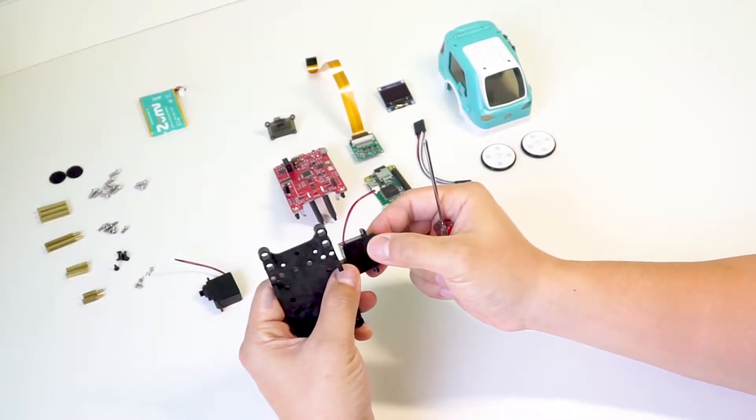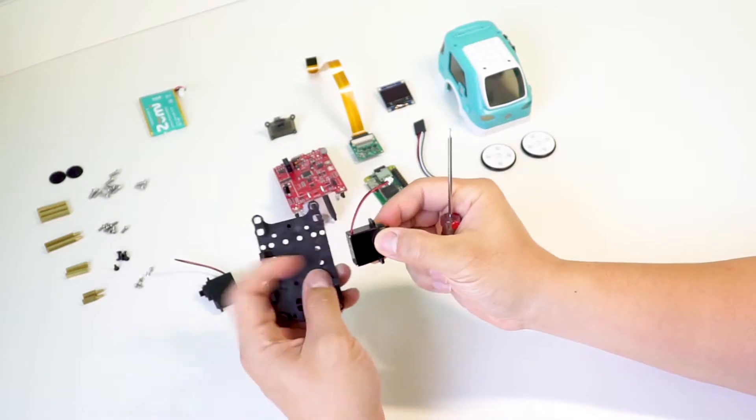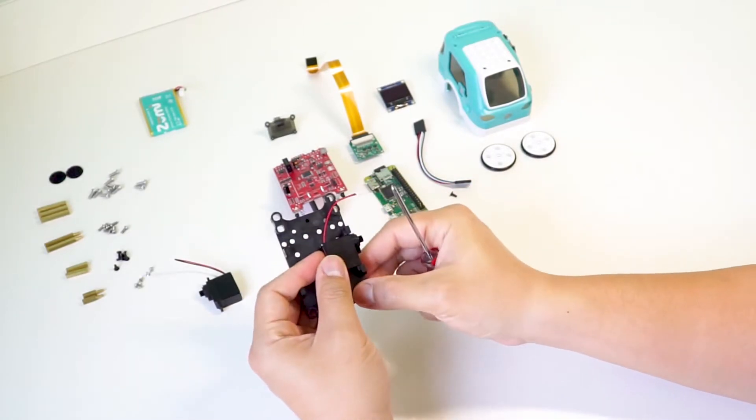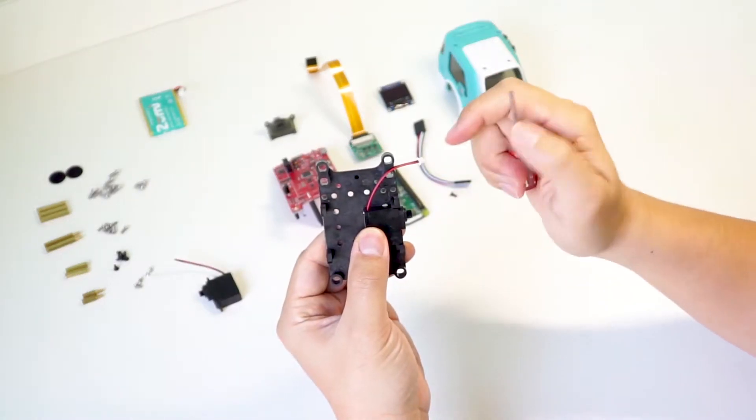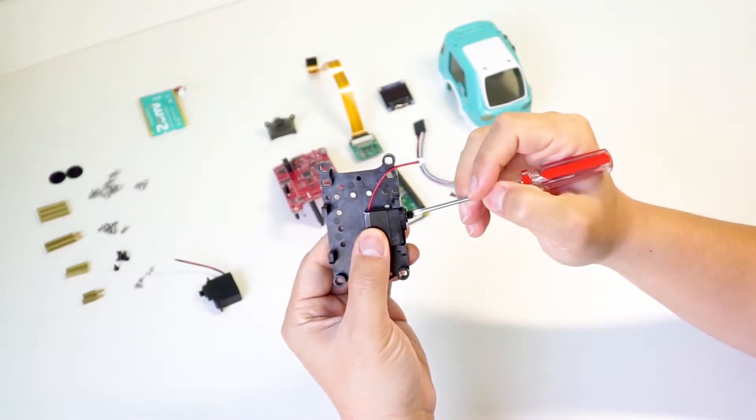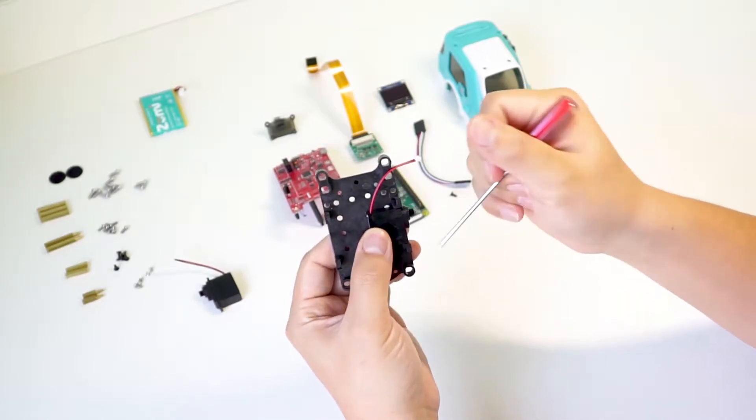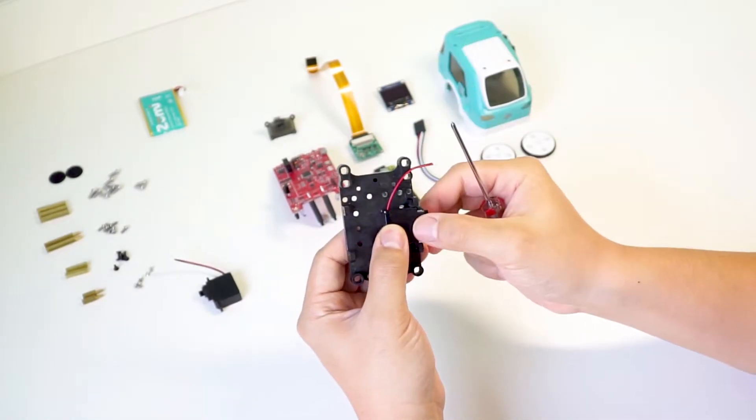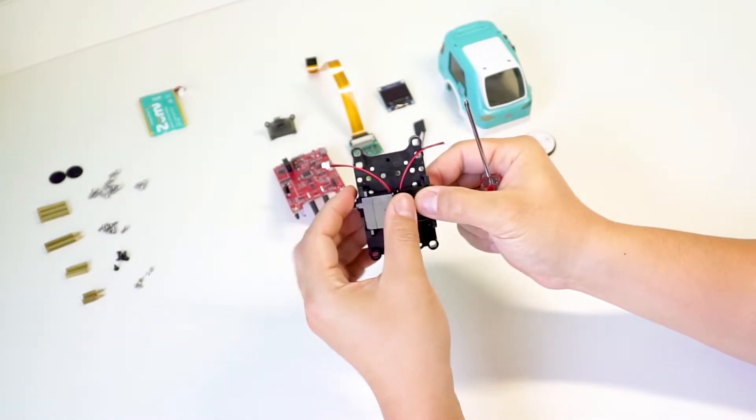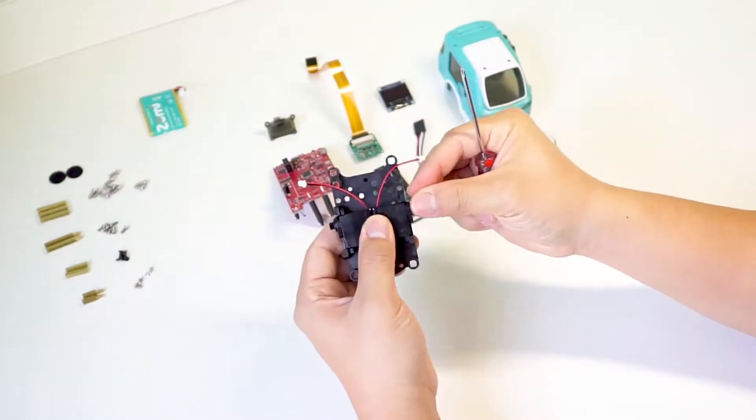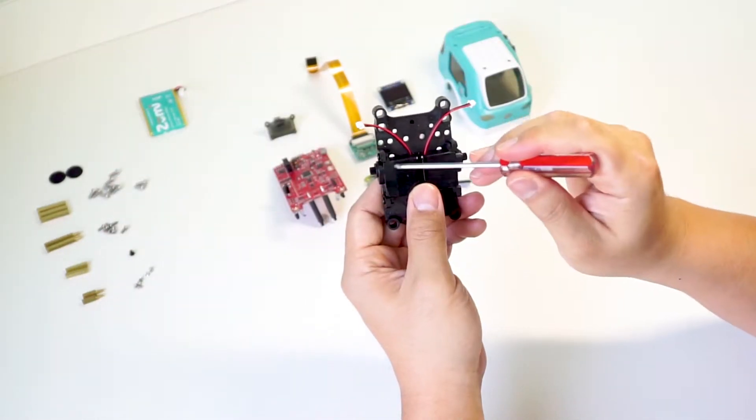First, you're going to attach the two motors to the chassis. Make sure the arms of the motors are on the inside of the chassis arms. Also, make sure that the shaft of the motors, which is the part right here, and the wires are towards the back and not towards the front of the chassis. Make sure to double check the directions on this step, otherwise if you have things backwards you'll end up having to take Zumi apart if you find this out after you boot her up.